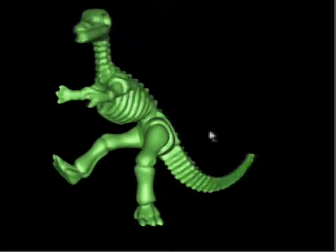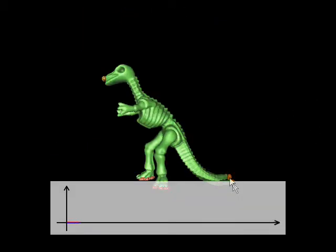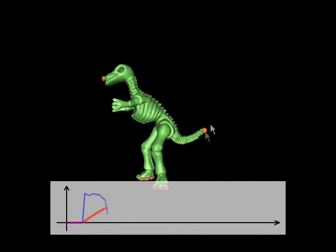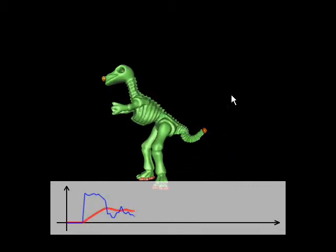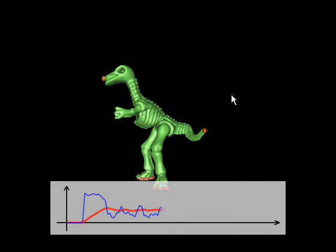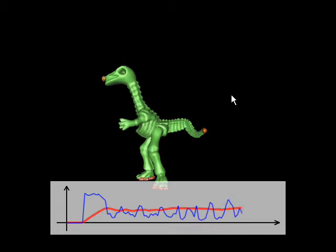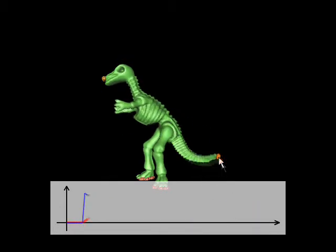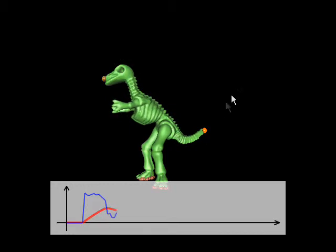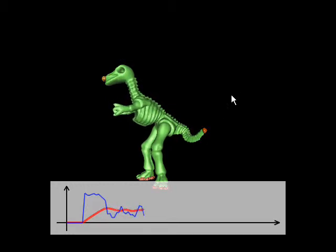We formulate gradient domain mesh deformation as a constrained nonlinear least squares problem. This has to be solved using an iterative numerical solver. A challenging issue is the convergence and stability of the solver. Standard numerical solvers lead to slow convergence and iteration instability.